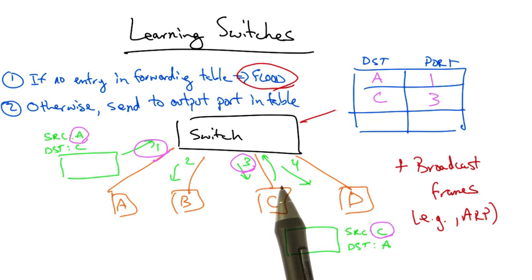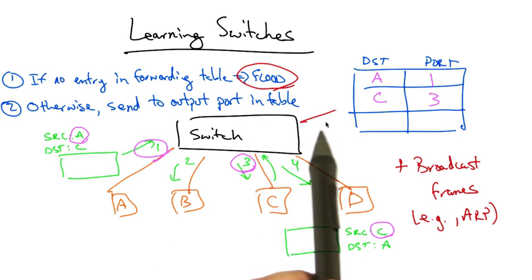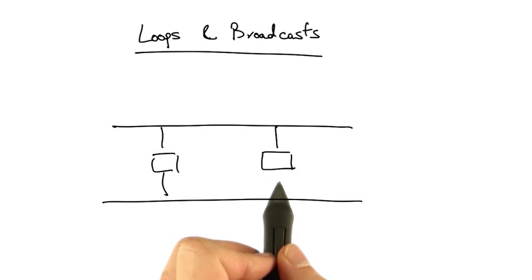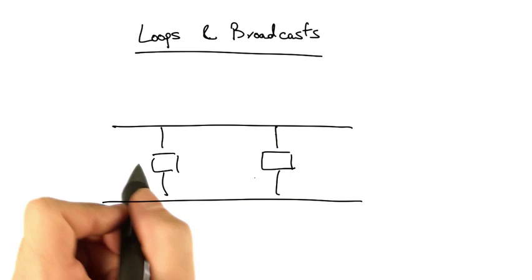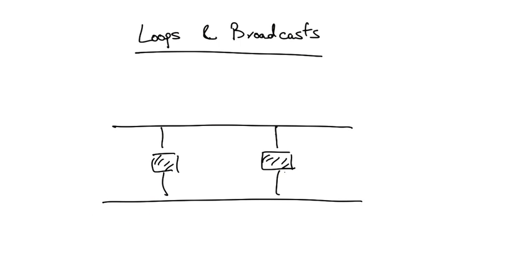Now because learning switches still sometimes need to flood, we still have to take care when the network topology has loops. Most underlying physical topologies have loops for reasons of redundancy. If any particular link fails, you'd still like hosts on the LAN to remain connected. But let's see what happens when the underlying physical topology has a loop.